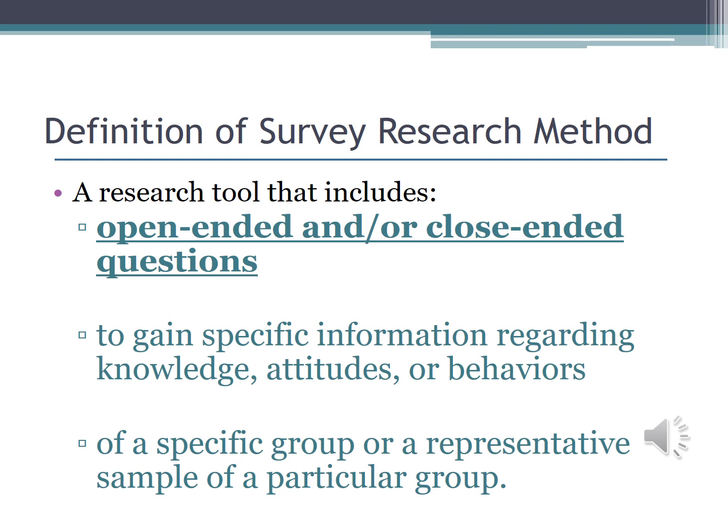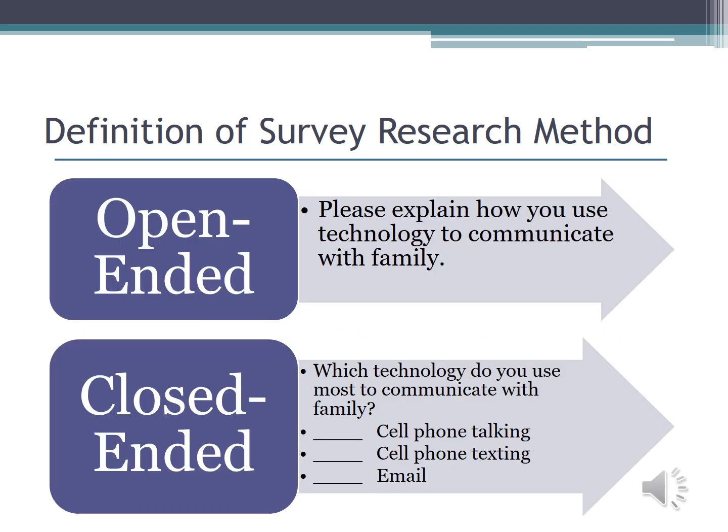Let's break these three components down. First, survey research is a research tool that includes open-ended and/or closed-ended questions. Open-ended questions allow our participants to respond in a manner they see fit; these types of questions do not constrain their responses. They can be as simple as 'what is your year in school,' which is going to yield a limited number of nominal responses to which we can assign numbers for data analysis — one for freshmen, two for sophomore, and so forth.